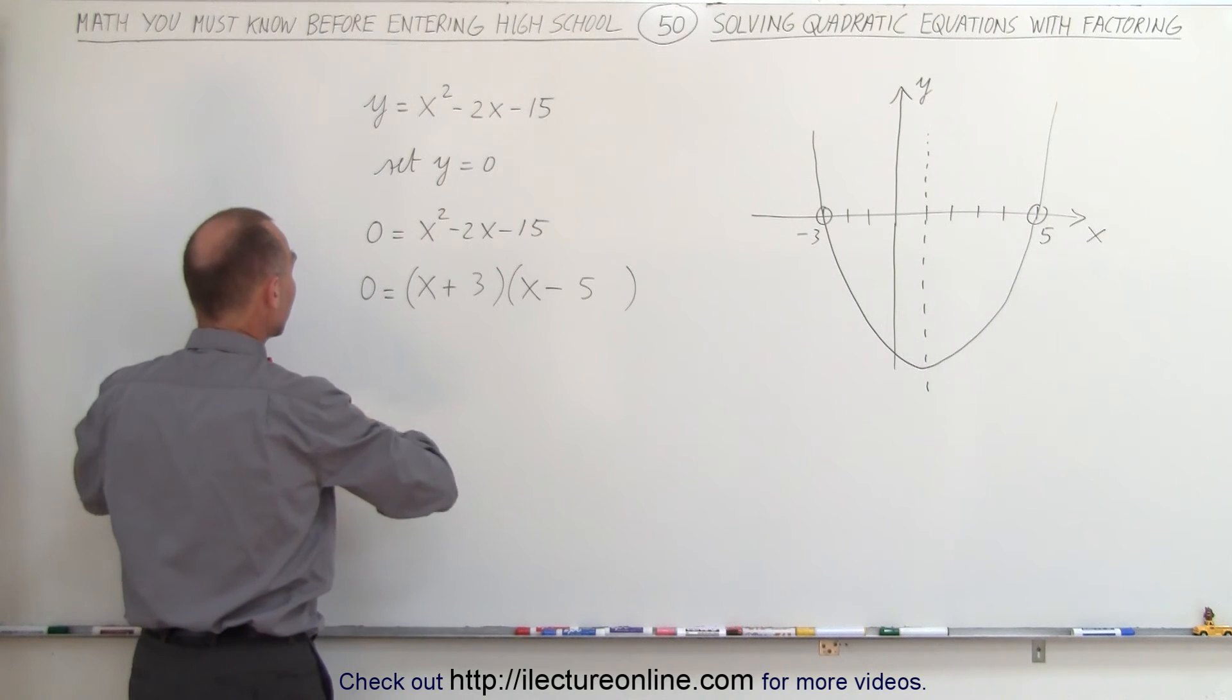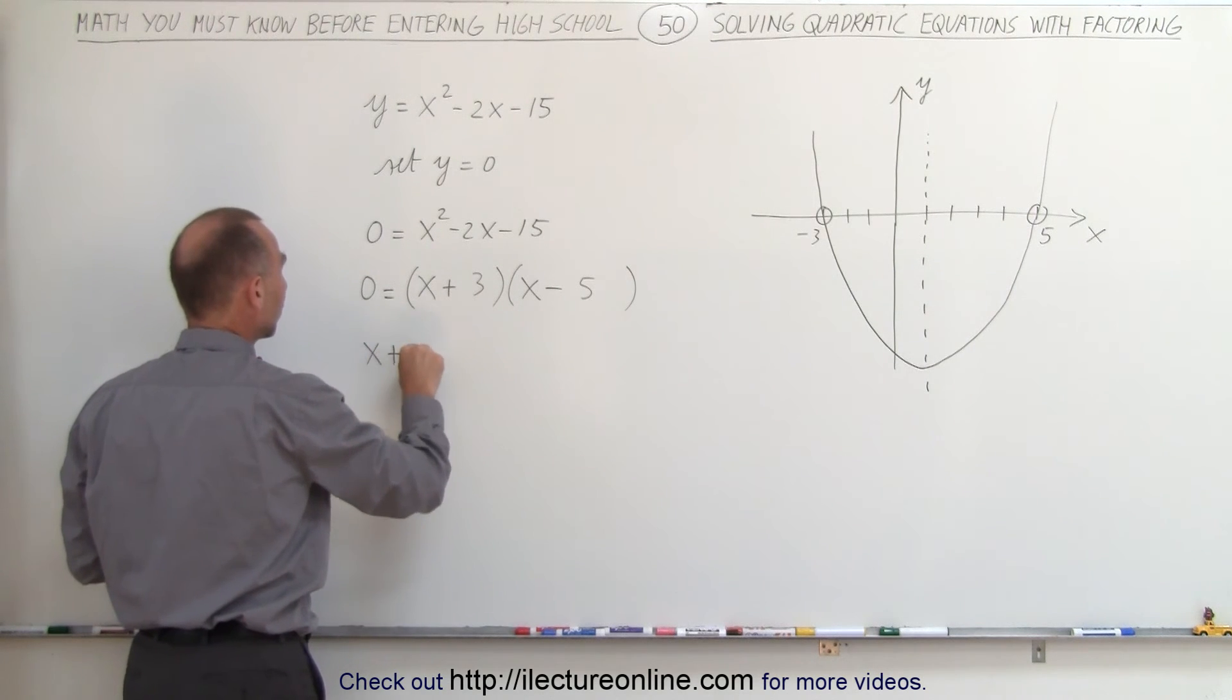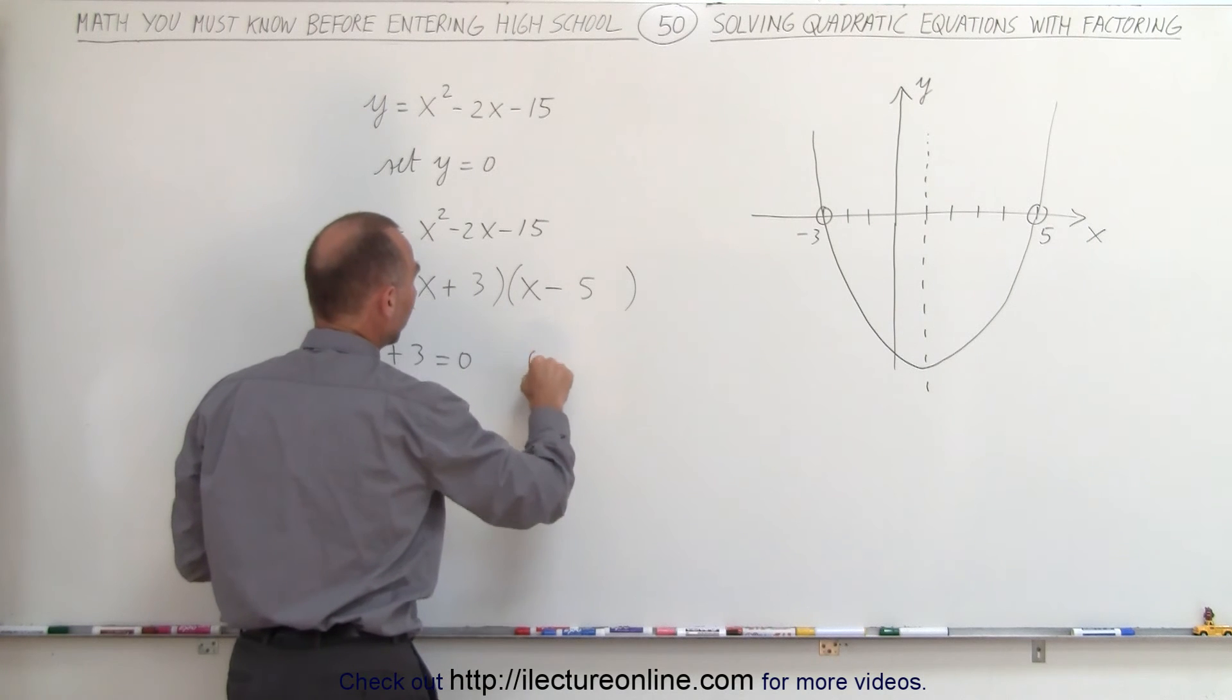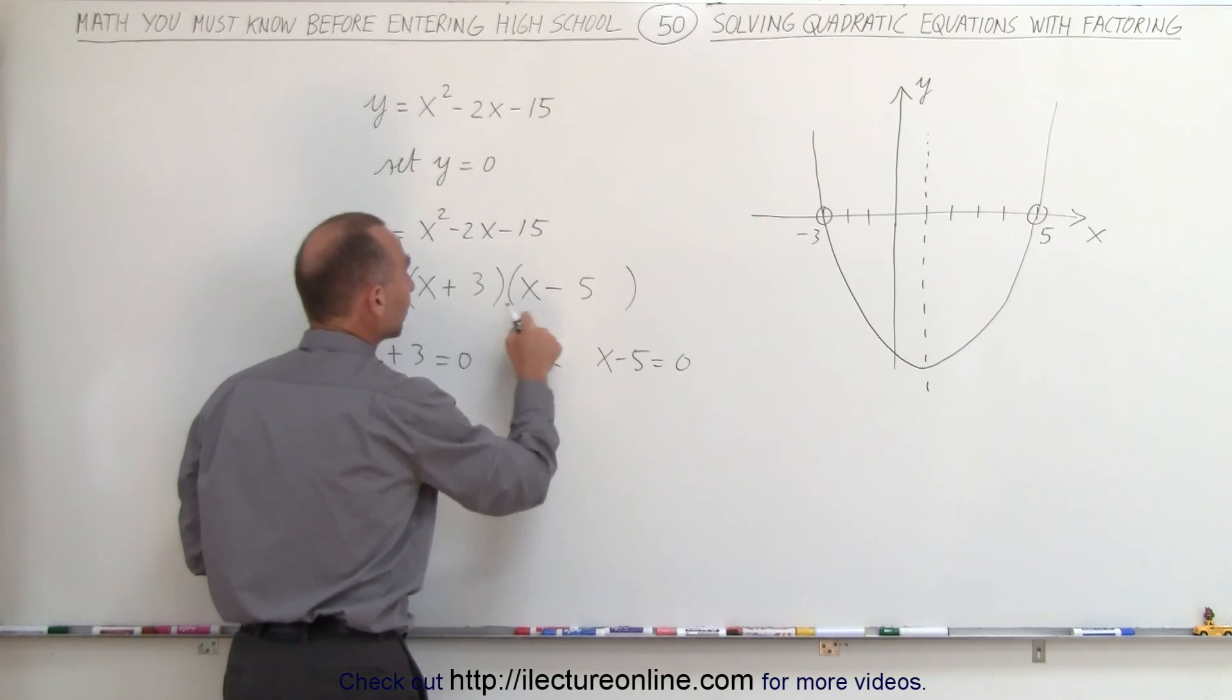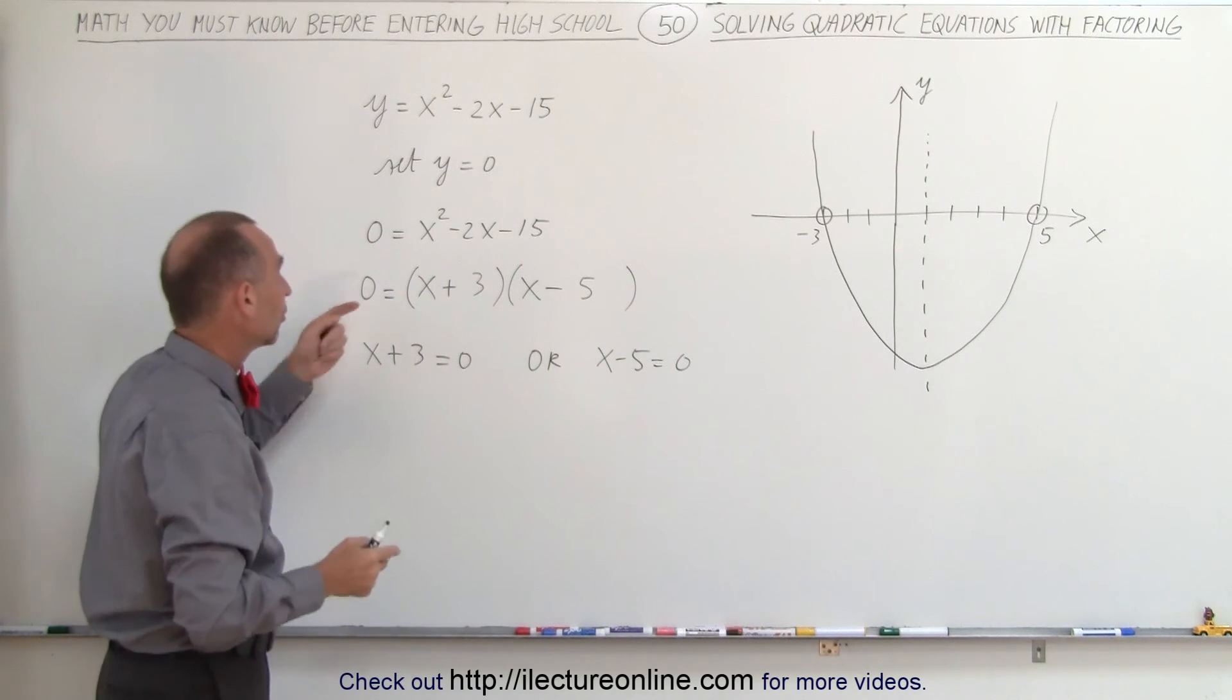So this means that either x plus 3 equals 0 or x minus 5 equals 0. Otherwise, when you multiply them together, there's no way to get 0.